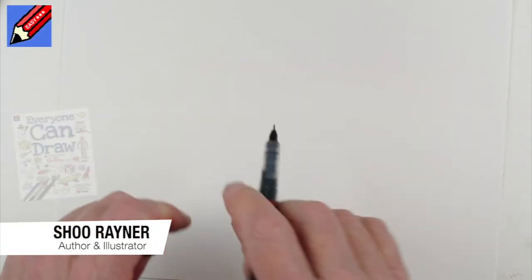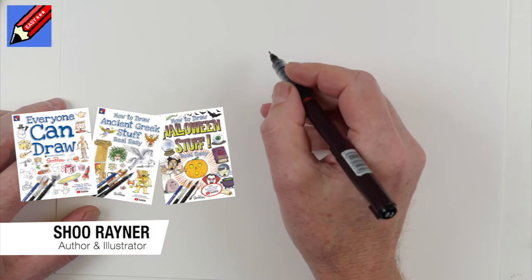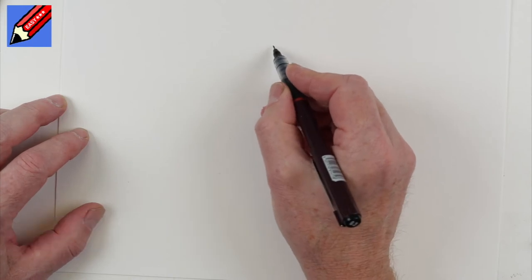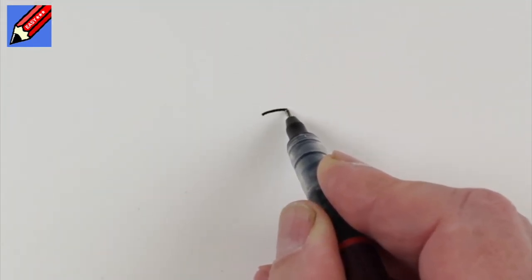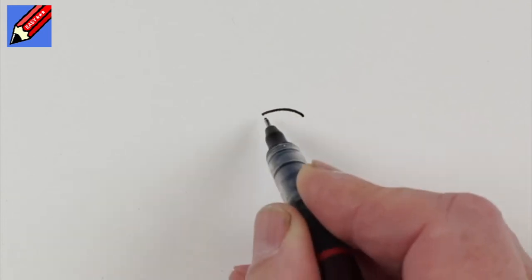To draw a fizzy bottle, a two liter fizzy bottle for soda or lemonade pop, whatever you call it in your part of the world, draw a little curve like that.